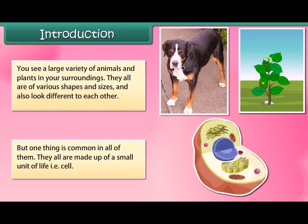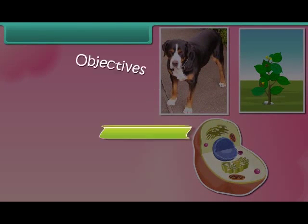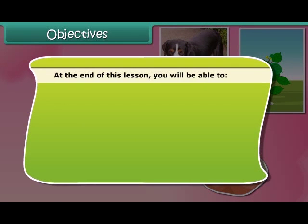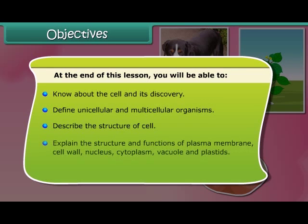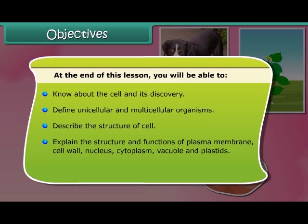In this module we are going to learn about the cell and its structure. At the end of this lesson you will be able to know about the cell and its discovery, define unicellular and multicellular organisms, describe the structure of the cell, explain the structure and functions of cell membrane, cell wall, cytoplasm, nucleus, vacuole, and plastids, and differentiate between plant and animal cells.